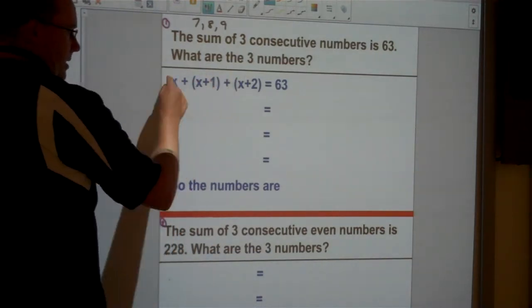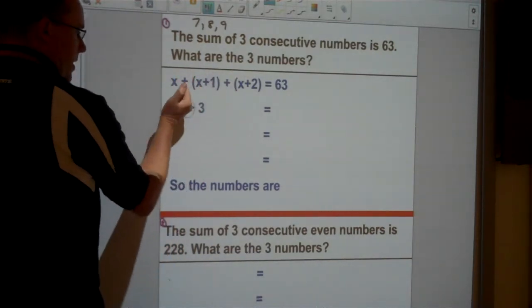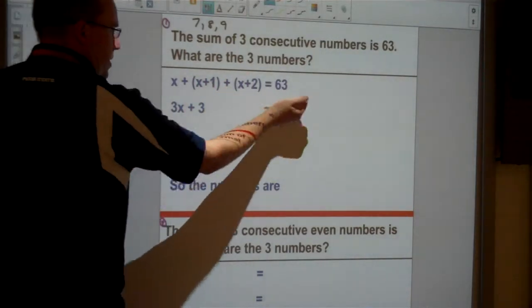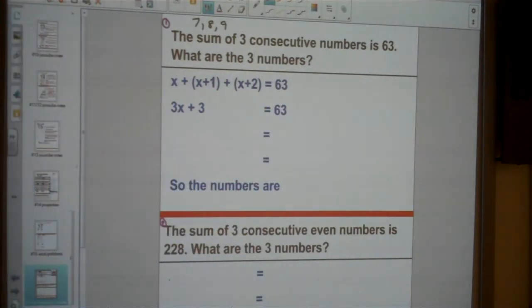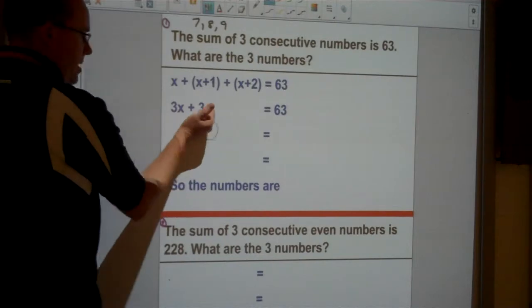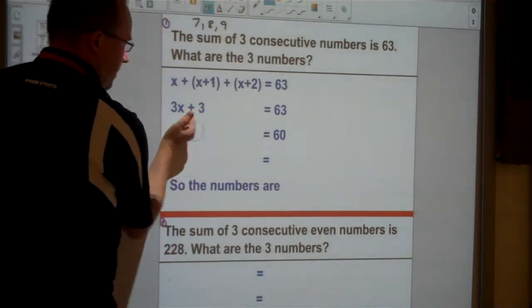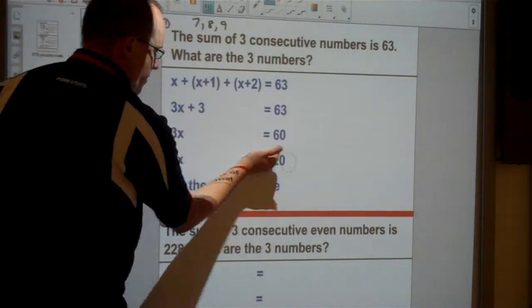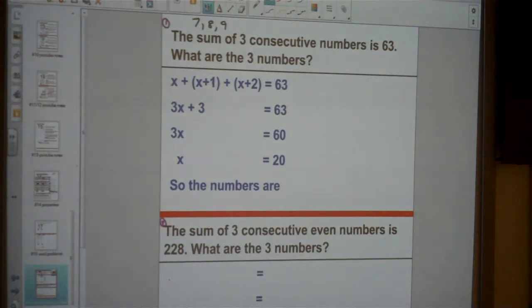And now we've got to try and solve this. Now to do that we've got to collect terms together. So x plus x plus x is 3x. And 1 plus 2 is 3. And now I should be able to solve this fairly easily. Instead of adding 3, I'm going to go ahead and subtract 3 from both sides. And instead of times it by 3, I'm going to go ahead and divide by 3.